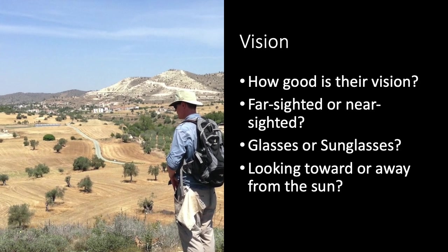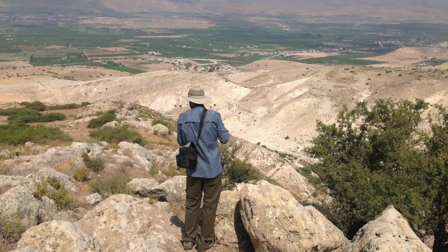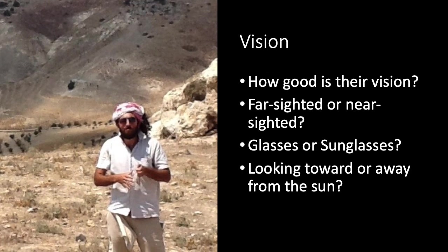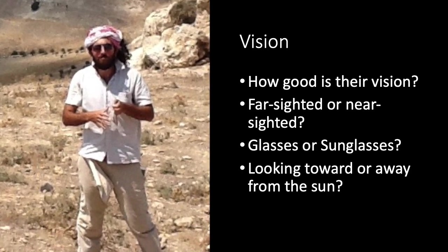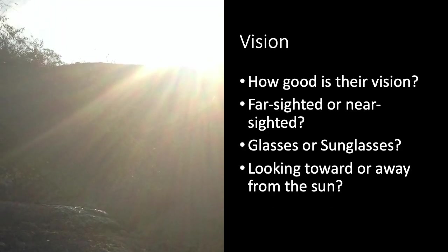For any type of survey that involves visual detection of artifacts and features, vision is one of the most obvious variations among surveyors. Whether they are near or far-sighted, wearing glasses or sunglasses, or walking towards the sun will have obvious impacts on their ability to detect things.